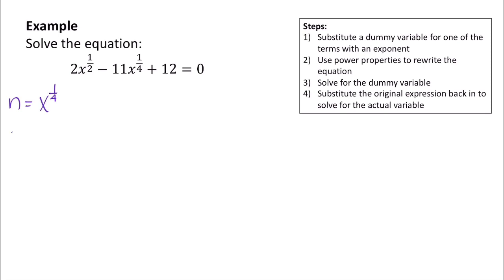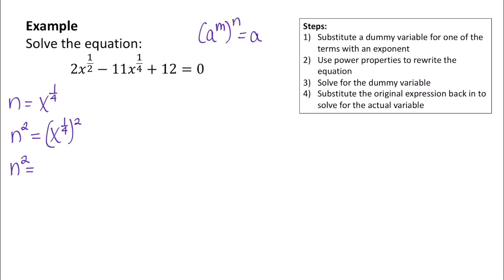What happens if I square both sides of this equation? I get n squared equals x to the 1 fourth squared. Using the power property — if I have a to the m raised to the n power, I multiply those two powers together — so 1 fourth times 2 gives me x to the 1 half. Notice I have terms I can plug in and substitute into the original problem: x to the 1 half equals n squared.